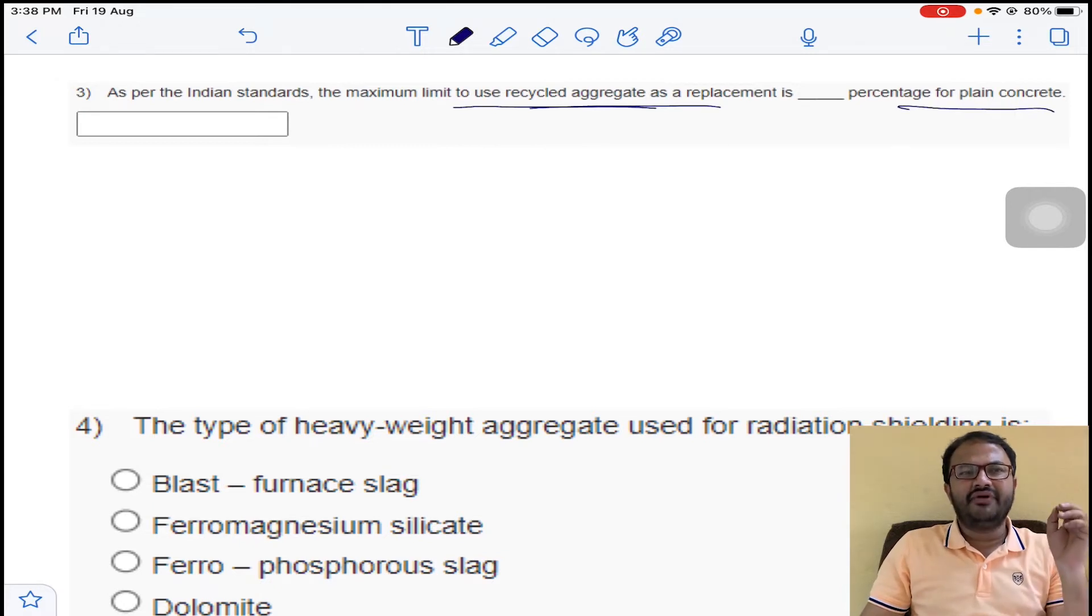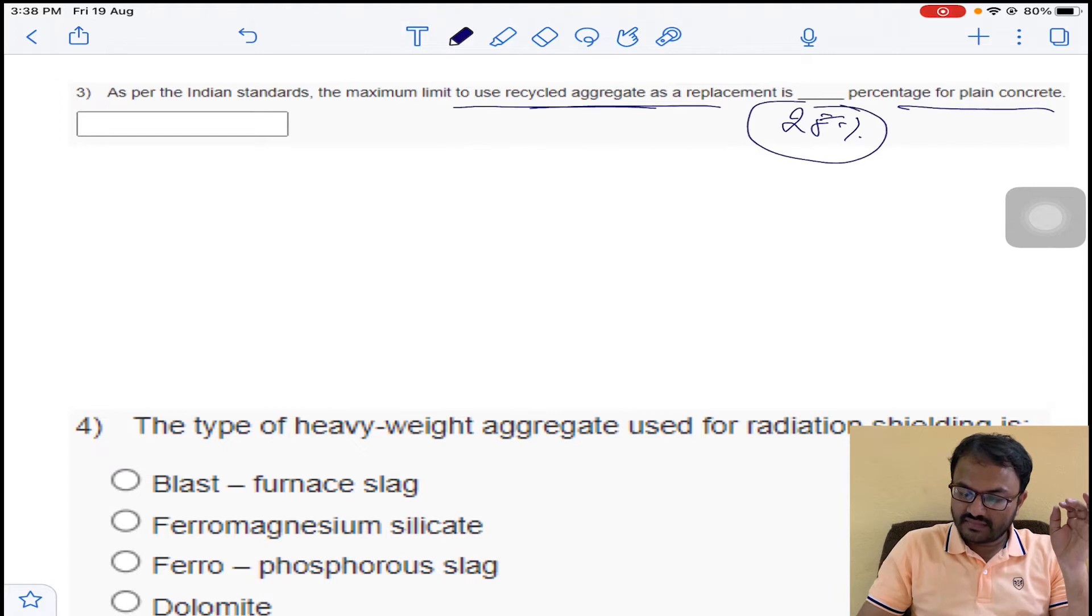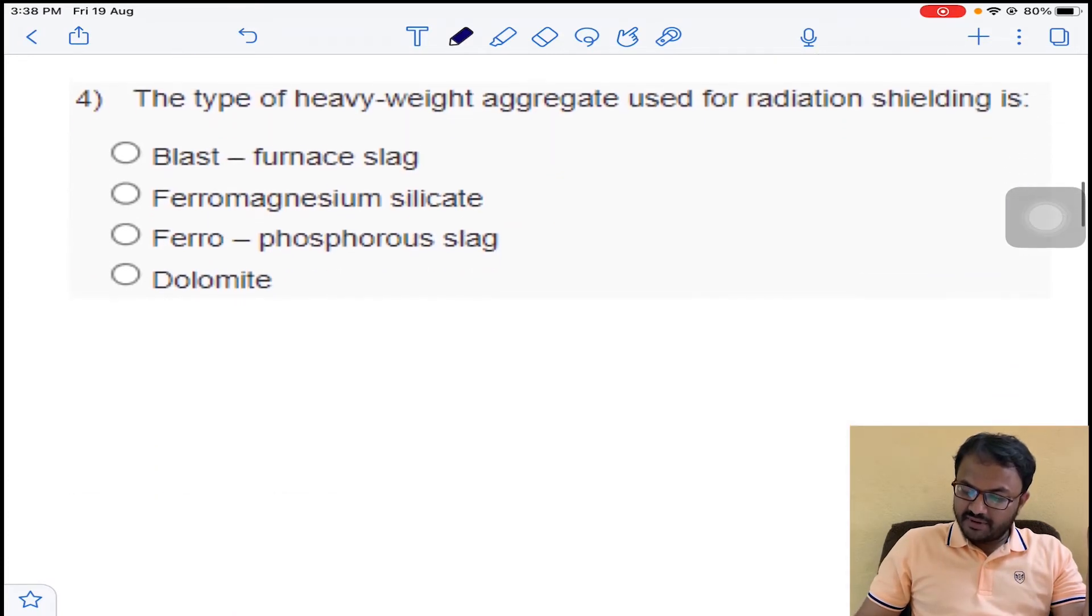Generally we can replace the normal aggregates with recycled aggregates, that is already used aggregates, by only 25 percentage. So the answer is 25 percentage for question number 3.